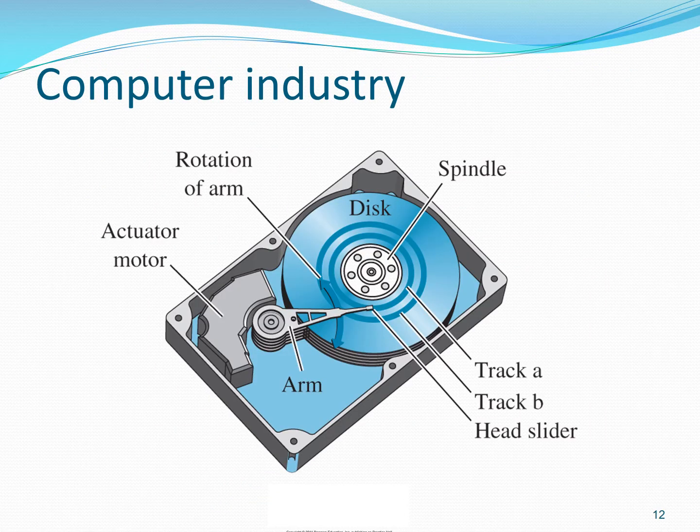In the computer industry, there are applications of control systems. The figure shows a hard disk that is in your computer. To fetch data from a particular location, you need to precisely point the head. So, the control objective is to control the position of the head. Again, I do not intend to explain the working of all these applications; rather, I want to motivate you that control has many applications.